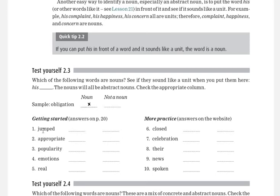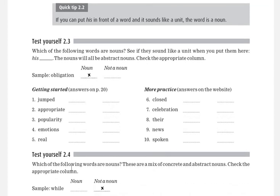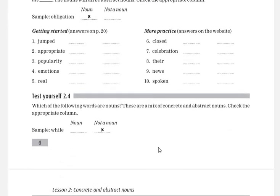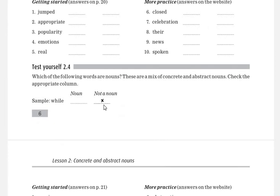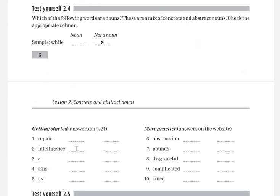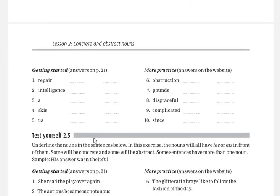Test yourself 2.4 is there. There is a mixture of concrete nouns and abstract nouns. You have to draw a cross here in front of either it is a noun or not a noun.